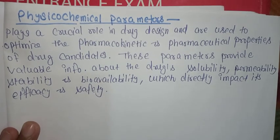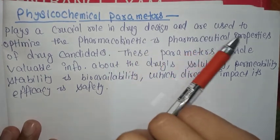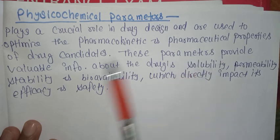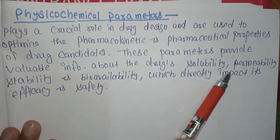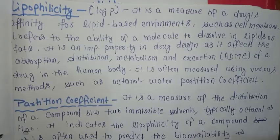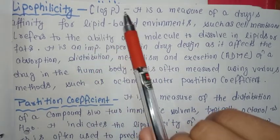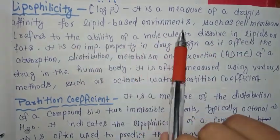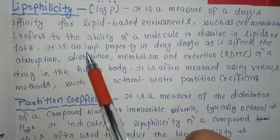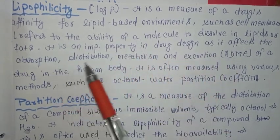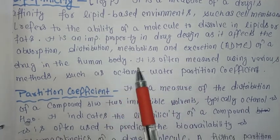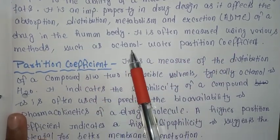Physicochemical parameters play a crucial role in drug design and are used to optimize the pharmacokinetic and pharmaceutical properties of drug candidates. These parameters include valuable information about drug solubility, permeability, stability, and bioavailability, which directly impacts efficiency and safety. The main parameter is lipophilicity, also denoted as log P. It is a measure of a drug's affinity for lipid-based environments such as cell membranes and refers to the ability of a molecule to dissolve in lipids or fats. Lipophilicity affects absorption, distribution, and metabolism in the human body, and is often measured using the octanol-water partition coefficient.